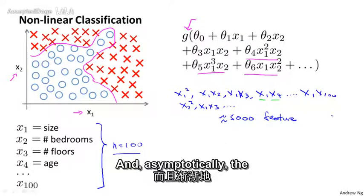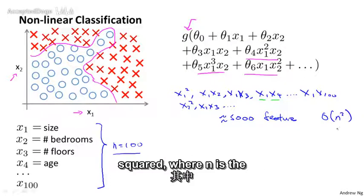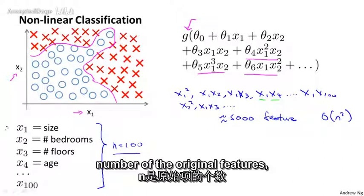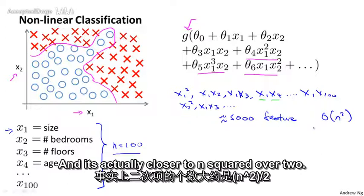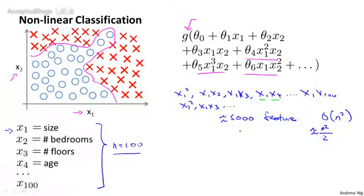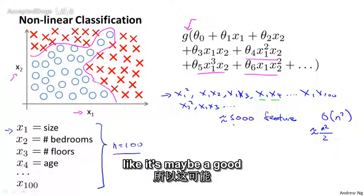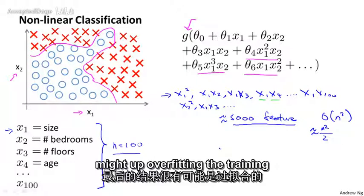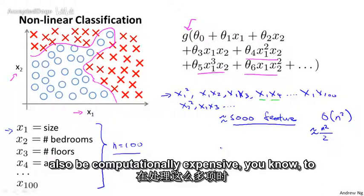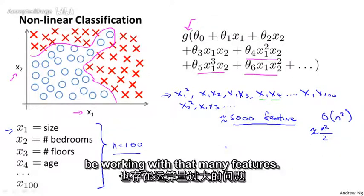And asymptotically, the number of quadratic features grows roughly as order n squared, where n is the number of the original features like x1 through x100 that we had. It is actually closer to n squared over two. So including all the quadratic features doesn't seem like a good idea because that's a lot of features and you might end up overfitting the training set. And it can also be computationally expensive to be working with that many features.